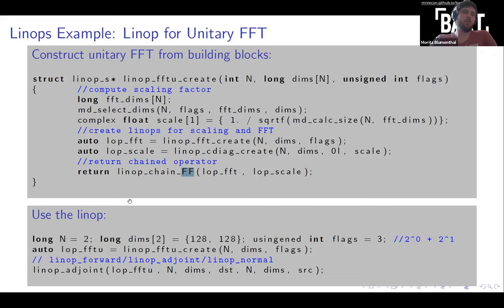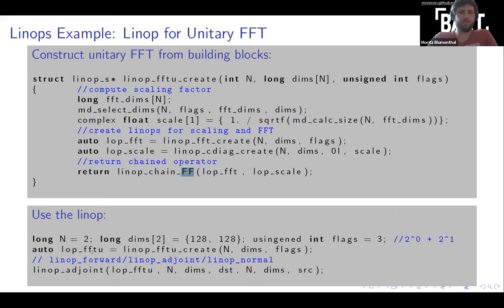Here is a short example of how to use this unitary FFT operator. We set the dimensions — in this example a 128 by 128 image with two dimensions. We set the flags to three, representing two to the power of zero plus two to the power of one, selecting both the zeroth and first dimensions. Then we create our unitary FFT operator using the function we just defined. In the third step, we apply it onto our data — in this example applying the adjoint operator to our input. You could also use linop forward for the forward model.